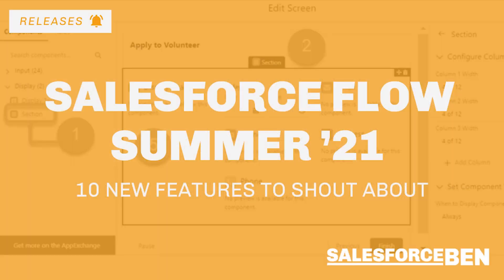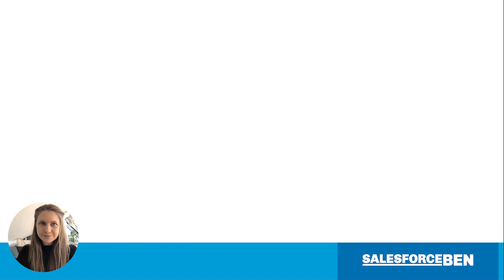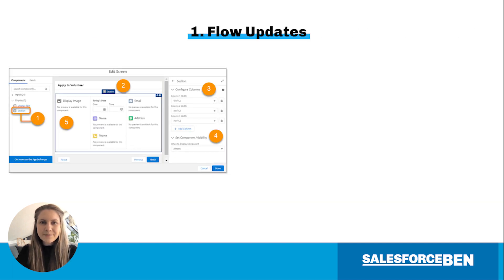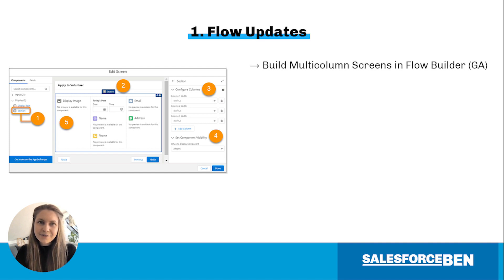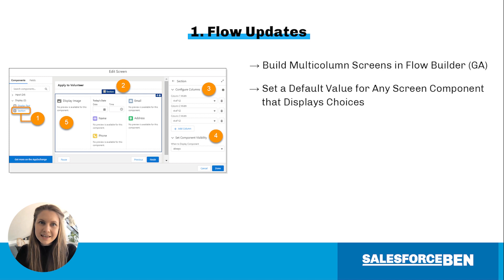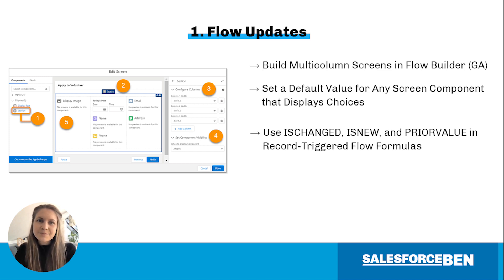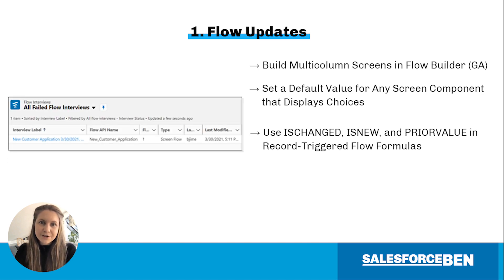For anyone who follows the Salesforce releases, you'll know there are many amazing enhancements to Flow with each new release. Summer 21 does not disappoint. Keep an eye out for our Summer 21 Flow features post, which will cover all things new with Flow. But for now, here are a few standout updates. What's become generally available is the ability to build multi-column screens in Flow Builder, set a default value for any screen component that displays choices, use isChanged, isNew, and prior value in record-triggered flow formulas. Some new functionality will help you find failed flows faster and debug flows with a click of a button.